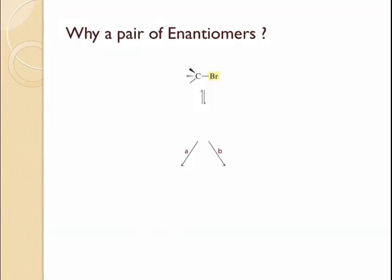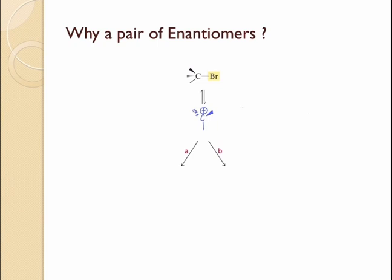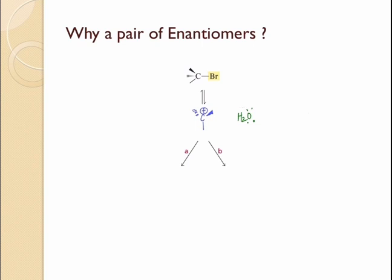Here is the detailed explanation of why a pair of enantiomers is obtained in an SN1 reaction when you start with an alcohol halide where the halogen is attached to an asymmetric center. The first step in the SN1 reaction forms the carbocation in which the leaving group leaves. The carbocation is generally a planar intermediate, where this carbon and the atoms connected to it all lie in the same plane. Therefore, when the nucleophile — let's say water — comes in, it can attack this carbocation in two different directions, from here or from here, thereby leading to the formation of two enantiomers.